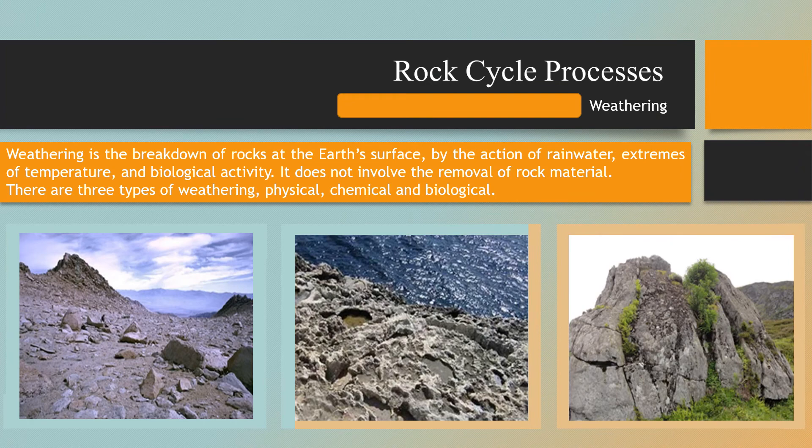Let's look at the key rock cycle processes. Number one: weathering. Weathering is the breakdown of rocks at the Earth's surface by the action of rainwater, extremes of temperature, and biological activity. It does not involve the removal of rock material. There are three types of weathering: physical, chemical, and biological.